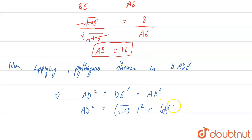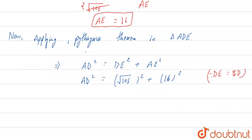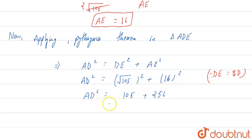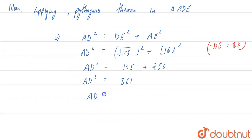Now DE equals BD, which equals √105, and AE equals 16. So AD² equals (√105)² plus 16², which gives 105 plus 256, which equals 361. Therefore AD equals √361, which is 19 centimeter. So this is our final answer.